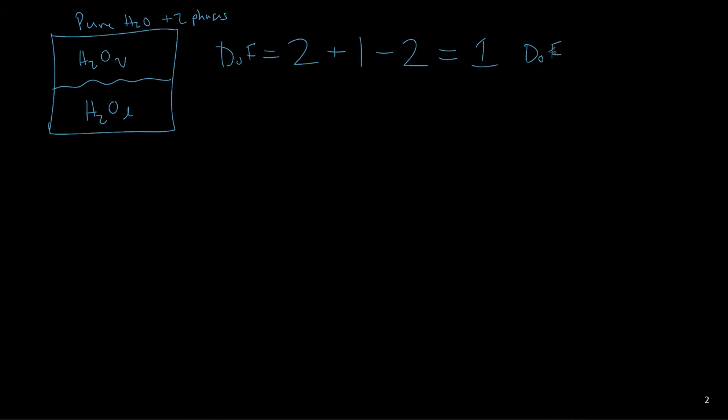So that means we can specify one intensive variable, and then the rest of the system is fixed. For example, if we say that the pressure is equal to 1 atmosphere, we know that the normal boiling point of water is 100 degrees Celsius. So if we want to have a pressure of 1 atmosphere and both liquid and vapor phases, we do not get to choose the temperature. The temperature is fixed and equal to 100 degrees Celsius.